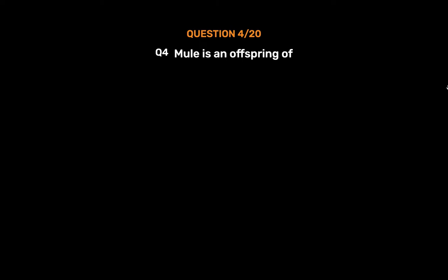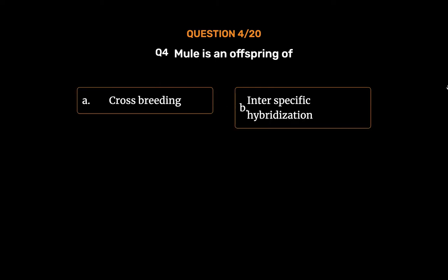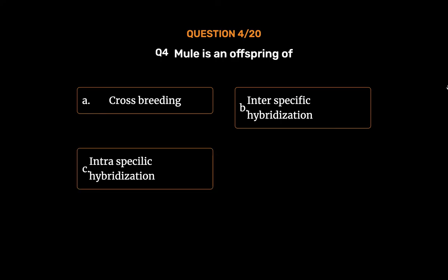Question 4: Mule is an offspring of — Option A: Crossbreeding. Option B: Interspecific hybridization. Option C: Intraspecific hybridization. Option D: ...